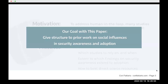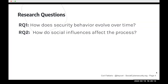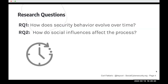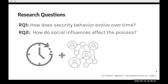In this paper, we give structure to prior work on social influences in security awareness and adoption. We do this by answering the following research questions: First, how does security behavior evolve over time? And second, how do social influences affect this process, with the goal ultimately of increasing security and privacy adoption?